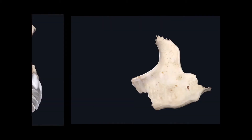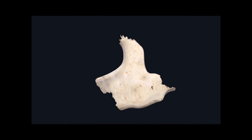Now we can move on to the zygomatic bone. The zygomatic bone has two unique landmarks. The first is this projection going superiorly towards the frontal bone, called the frontal process of the zygomatic bone. And then there's the temporal process of the zygomatic bone, oriented towards the temporal bone. If you remember from the last video there was a zygomatic process of the temporal bone — those two processes actually articulate. The zygomatic process of the temporal bone articulates right there with the temporal process of the zygomatic bone.